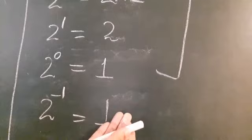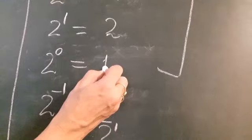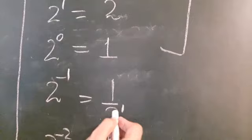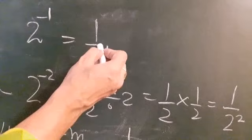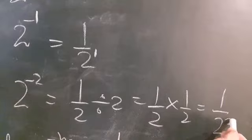So how do you get 2 raised to power minus 1? The next power is obtained by dividing the previous number by base 2. Similarly, 2 raised to power minus 2 is obtained by dividing the previous number by base 2. Dividing gives 1 upon 2 raised to power 2.